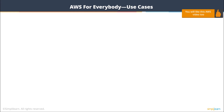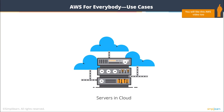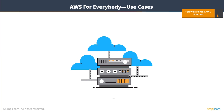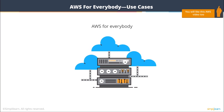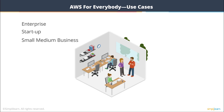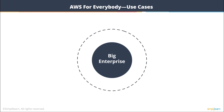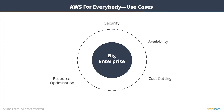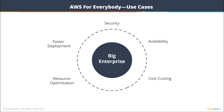The first question that comes to mind is: is AWS for me? Am I going to use server and cloud, storage and cloud? Let's look at the use cases for AWS — AWS for everybody. If you are a big enterprise, your priorities would be security, availability of service, cost cutting, resource optimization, and faster deployment. AWS gives you tools to achieve all of this.